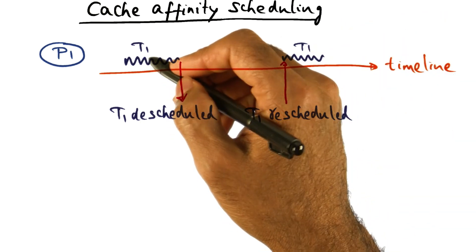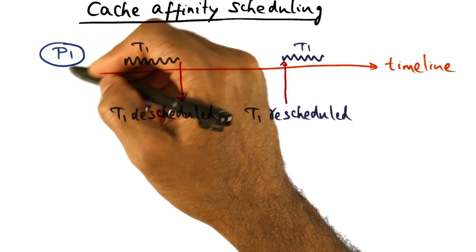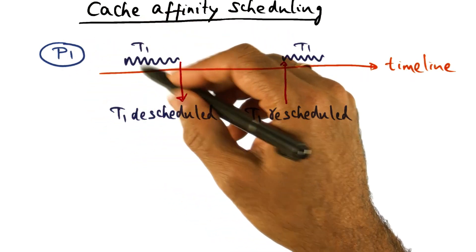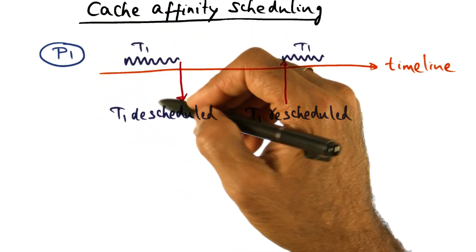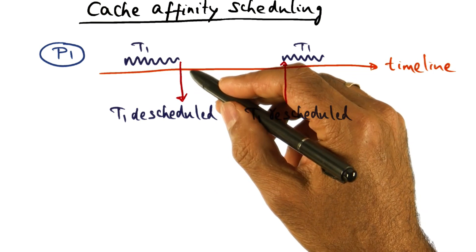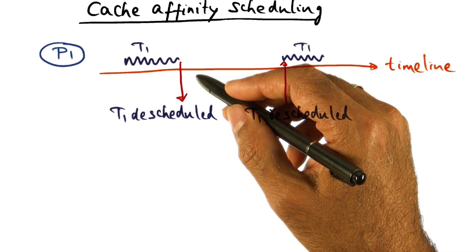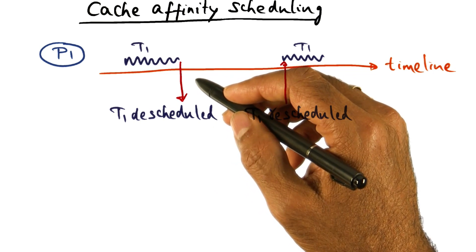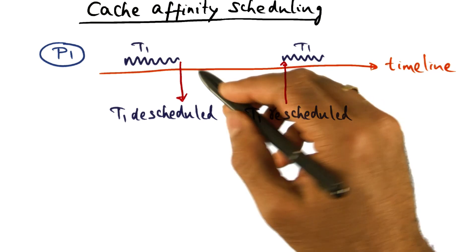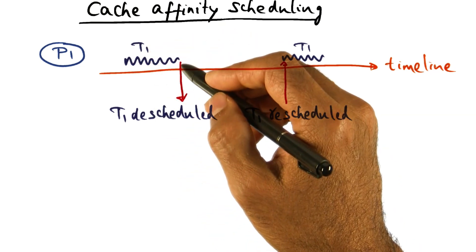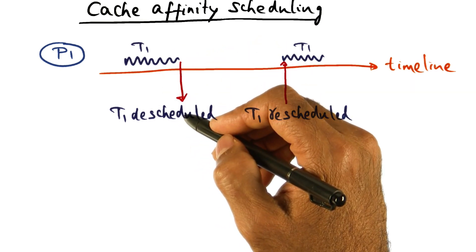If in a particular processor P1, I had this thread T1 running for a while, and it got descheduled at some point of time because it made an IO call, it tried to synchronize with another thread, or the time quantum expired for T1, any of those situations will result in T1 getting descheduled.